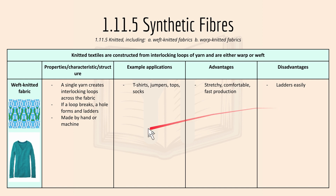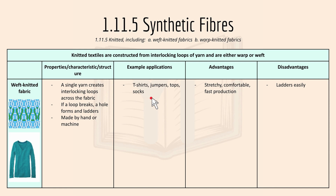Weft knitted fabric runs horizontally — a single yarn creates interlocking loops across the fabric. If a loop breaks, a hole forms and the fabric ladders. It can be made by machine or by hand. Examples include t-shirts, jumpers, tops, and socks. Advantages: relatively comfortable, stretchy, and fast to produce. Disadvantage: it ladders easily.